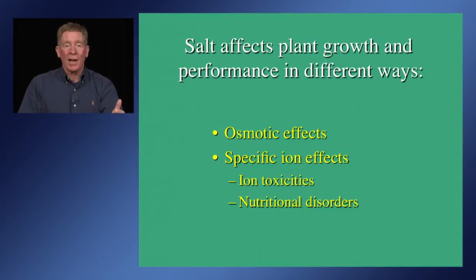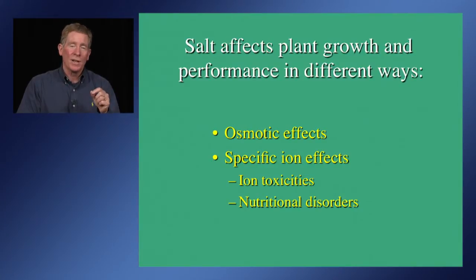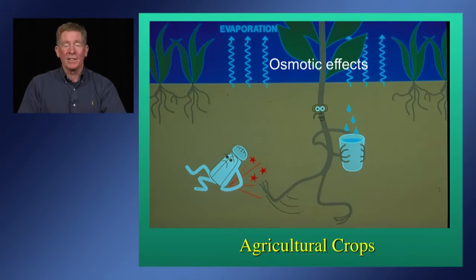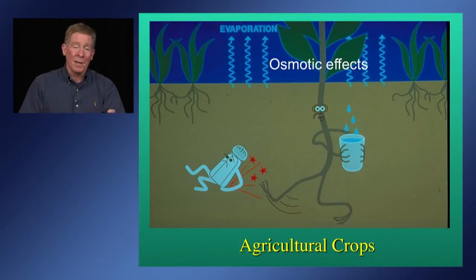Salinity affects plants in two major ways: osmotic effects and specific ion effects. Specific ion effects can be either ion toxicities or nutritional imbalances. For row crops, ion toxicities tend to be less problematic — with the exception of strawberries. Most specific ion effects are more of the nutritional disorder type, unless ion ratios are way out of balance. Regarding osmotic effects, all agricultural crops tend to take up water and leave the salts behind, selectively taking up nutrients while not absorbing most salts. The vast majority of what's taken up is water, concentrating all the salts behind.